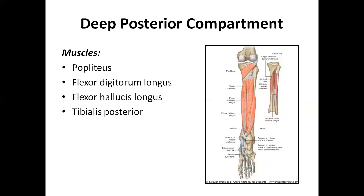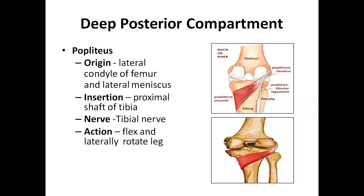Now we are talking about the deep compartment on the posterior side. Here we have the popliteus muscle, flexor digitorum longus, flexor hallucis longus, and tibialis posterior. The tibialis posterior is here; the tibialis anterior is our anterior compartment. The popliteus has its origin at the lateral condyle of the femur and the lateral meniscus.